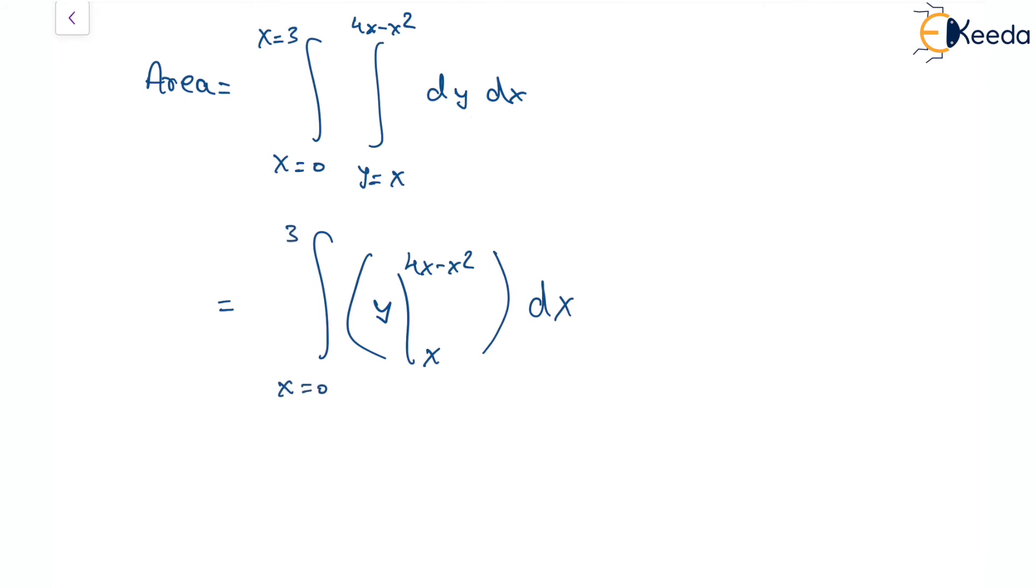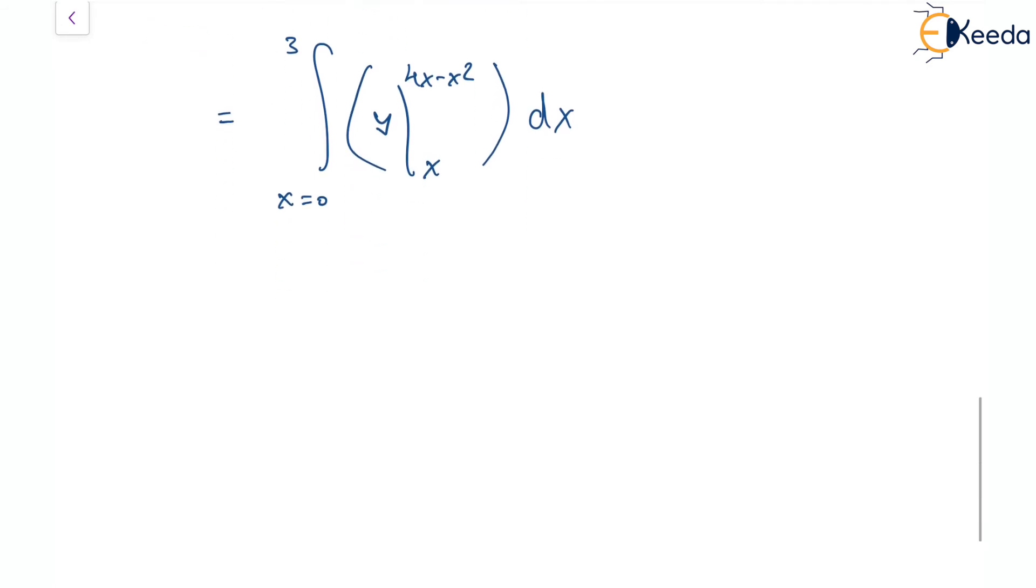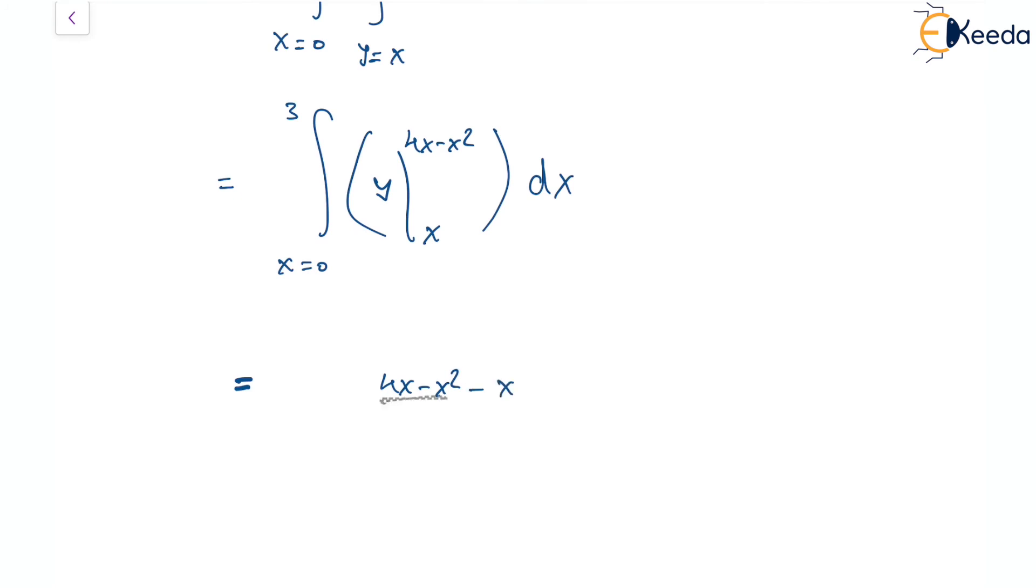The first part is integration in terms of dy, which gets you y. The limits are y = x and y = 4x - x². Putting the limits will have 4x - x² minus x. This one is the upper limit, the lower limit. Whatever comes out here, this thing needs to be integrated in terms of x from x = 0 to 3.